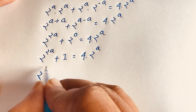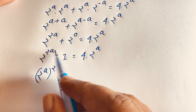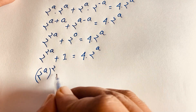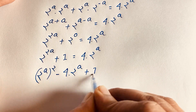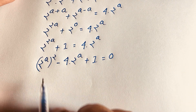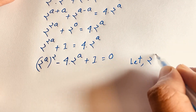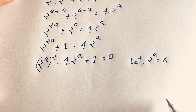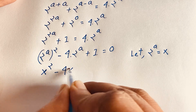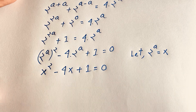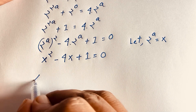Notice that 2 to the power 2a is the same as (2^a) squared. Rearranging, we get (2^a)² − 4·(2^a) + 1 = 0. Now let x = 2^a, so we have the quadratic equation x² − 4x + 1 = 0.